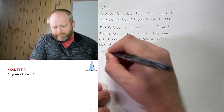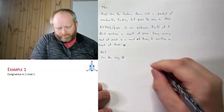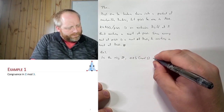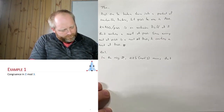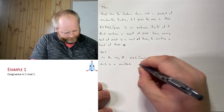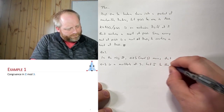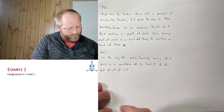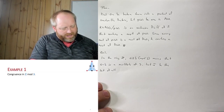For example 1, in the ring Z, we say A is congruent to B modulo 3. This means that if we look at the difference between A and B, it has to be a multiple of 3. So A minus B is a multiple of 3. Let's let I be the set of all multiples of 3.